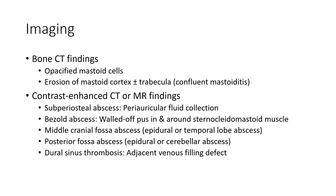Imaging: CT findings classifying mastoid disease include erosion of mastoid septa, contrast-enhanced CT showing opacified mastoid cells, subperiosteal abscess, post-auricular fluid collection, abscess wall enhancement, surrounding edema of the sternocleidomastoid muscle, middle cranial fossa abscess, posterior fossa abscess, and sigmoid sinus thrombosis.